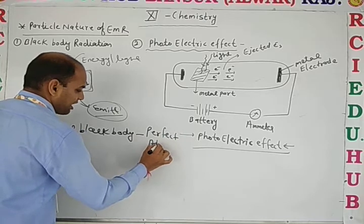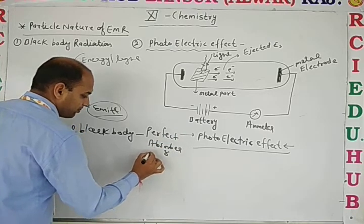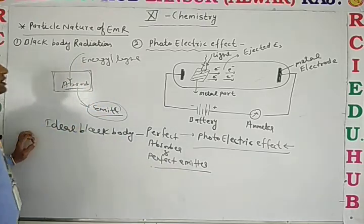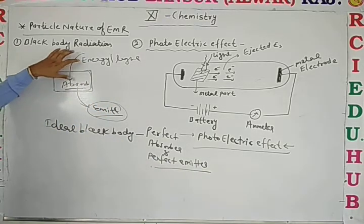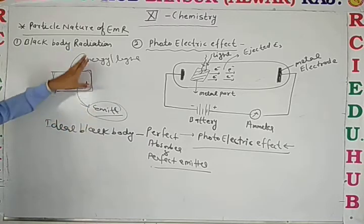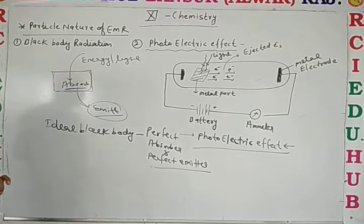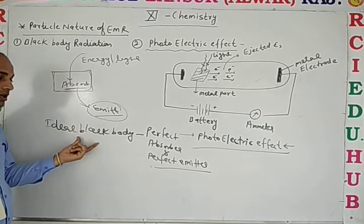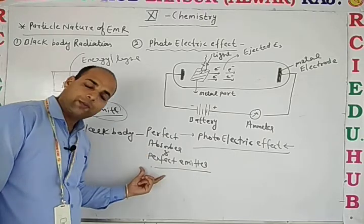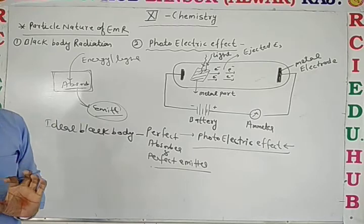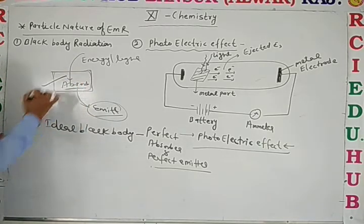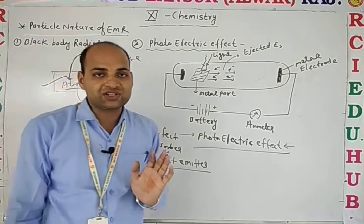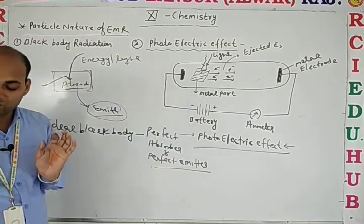A black body is a perfect absorber and a perfect emitter. An ideal body which absorbs the energy of light and also emits the energy of light is called a black body. Black body radiation is clear. An ideal black body is also called a perfect absorber as well as a perfect emitter.